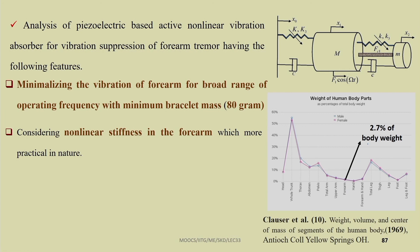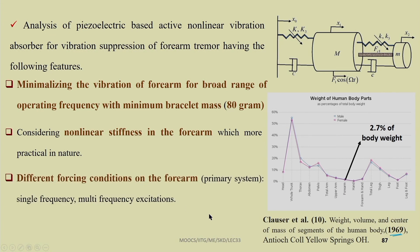For the forearm, this is 2.7 percent of body weight, from the 1969 work of Dempster (Yellow Springs OH) on weight, volume, and center of mass of body segments. One can consider non-linear stiffness in the forearm for a more practical model, with different forcing conditions — single frequency or multi-frequency excitation. The controlling force uses acceleration feedback, which is easier to implement since an accelerometer can be mounted on the system.